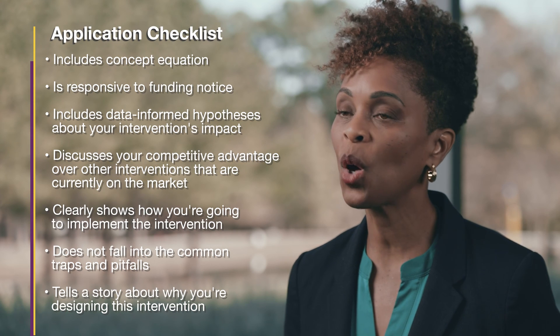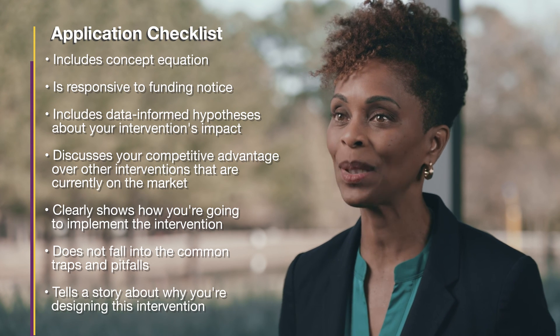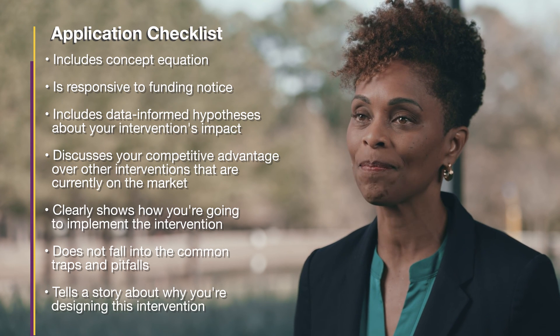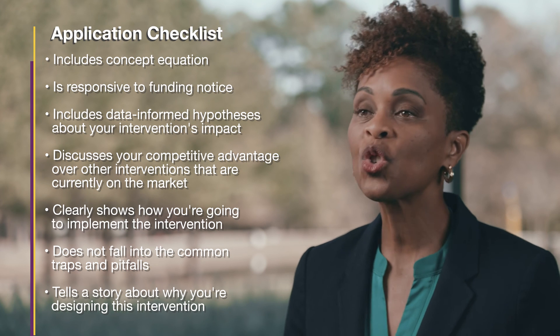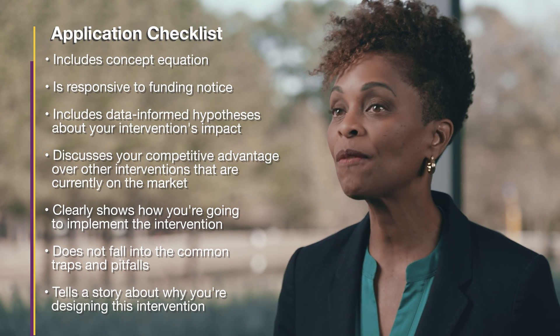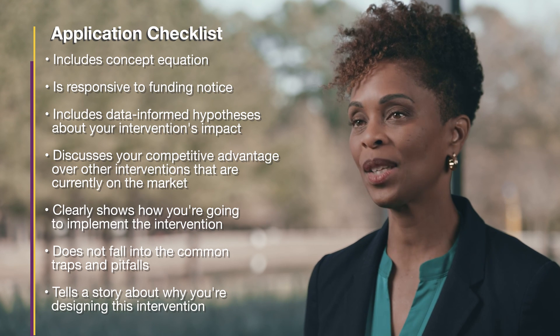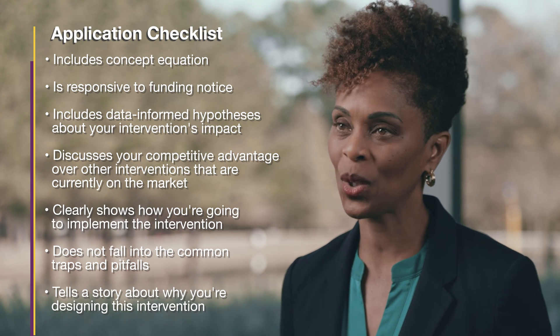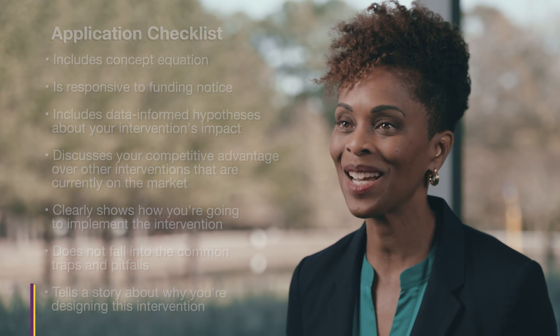Checking these boxes will go a long way toward ensuring a quality application. But it's also important to tell a story about why you're applying for a specific opportunity — whether it's because you're a parent who struggled with a lack of cultural competency in previous interactions with your child's pediatrician, or you've experienced food insecurity that led to a worsening of a chronic illness. This is the only time you'll be talking to the reviewers, and it is critical that you convey why you're passionate about your intervention. Thank you for taking the time to watch this video and learn more about developing a strong SBIR-STTR application for the National Institute on Minority Health and Health Disparities.